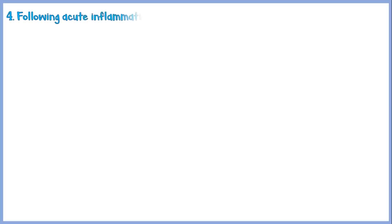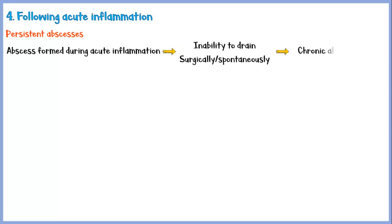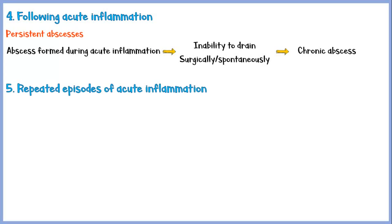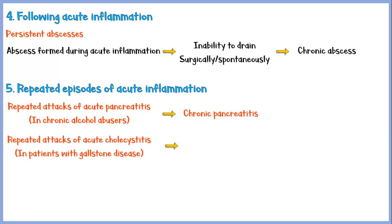Another situation where chronic inflammation takes place is following an acute inflammatory response. The most common example is persistent abscesses. Usually, abscesses are formed during acute inflammation. If the acute inflammatory abscess cannot be drained out either surgically or spontaneously, it becomes a chronic abscess. Repeated episodes of acute inflammation also cause chronic inflammation. For example, repeated attacks of acute pancreatitis, such as in chronic alcohol abusers, can cause development of chronic pancreatitis. And repeated attacks of acute cholecystitis may result in chronic cholecystitis in patients with gallstone disease.